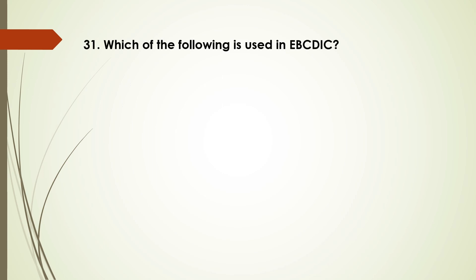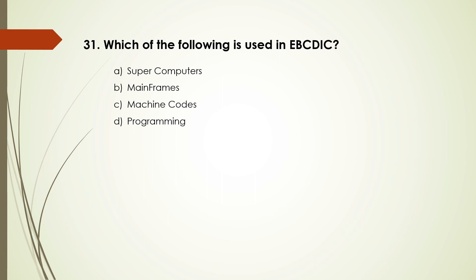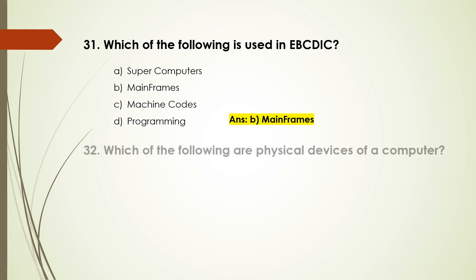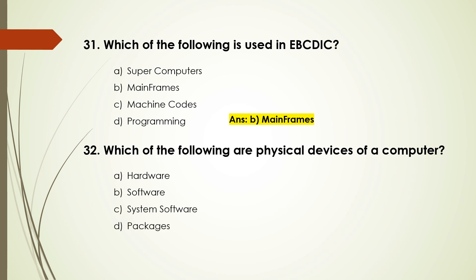Question number 31: Which of the following is used as EBCDIC? Options are: supercomputers, mainframes, machine codes, programming. The answer is B, mainframes. Question number 32: Which of the following are physical devices of a computer? Options are: hardware, software, system software, packages. The answer is A, hardware.